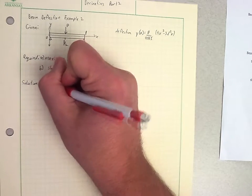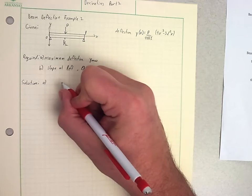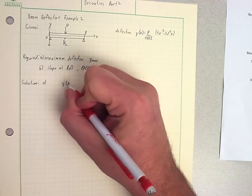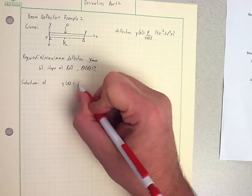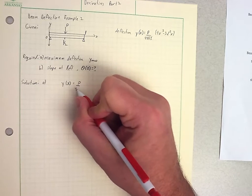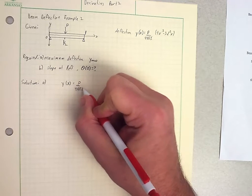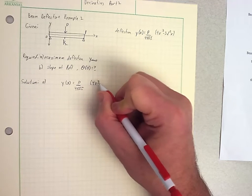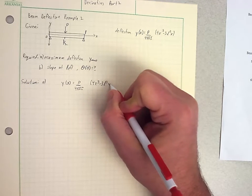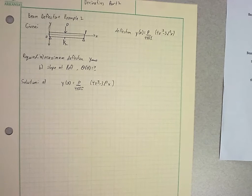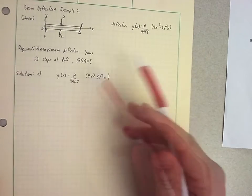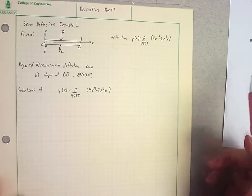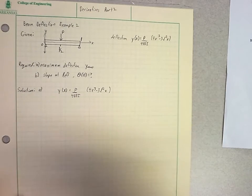So our solution, we'll have to start with our deflection function. So one thing it wants to know is the maximum deflection. We know when the maximum deflection occurs that the derivative of this is going to have to equal 0.